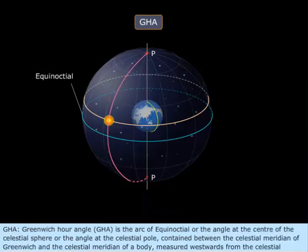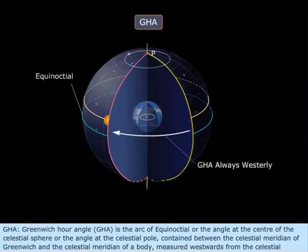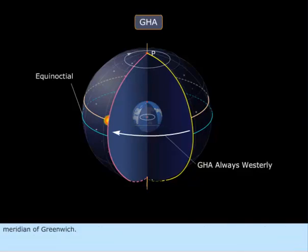Greenwich Hour Angle, or GHA, is the arc of the equinoctial, or the angle at the center of the celestial sphere, or the angle at the celestial pole, contained between the celestial meridian of Greenwich and the celestial meridian of a body, measured westwards from the celestial meridian of Greenwich.